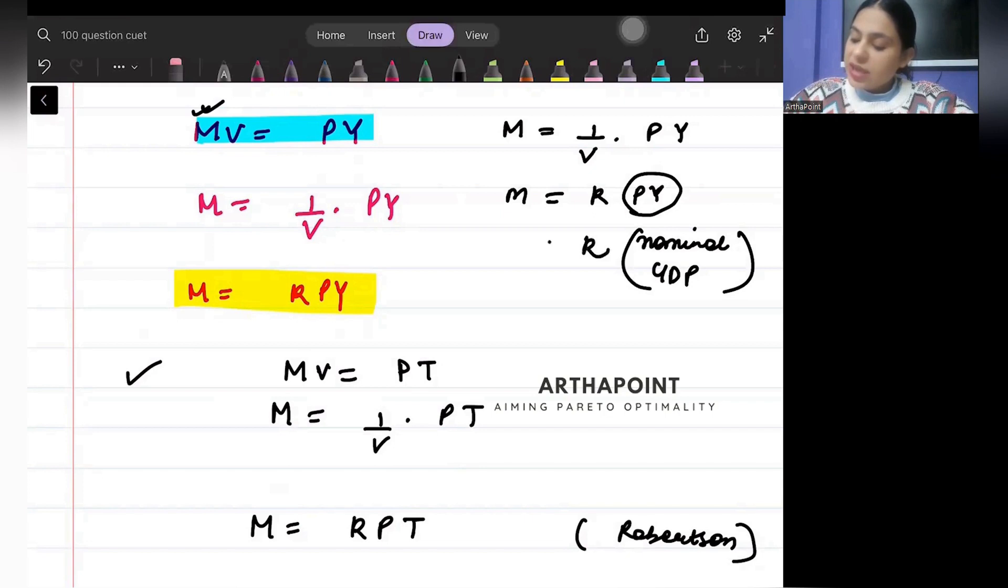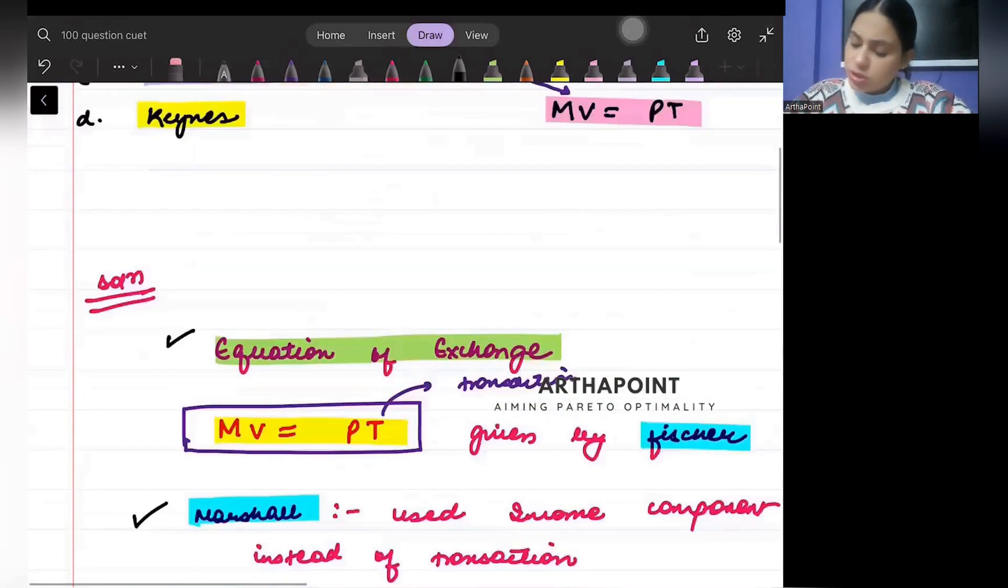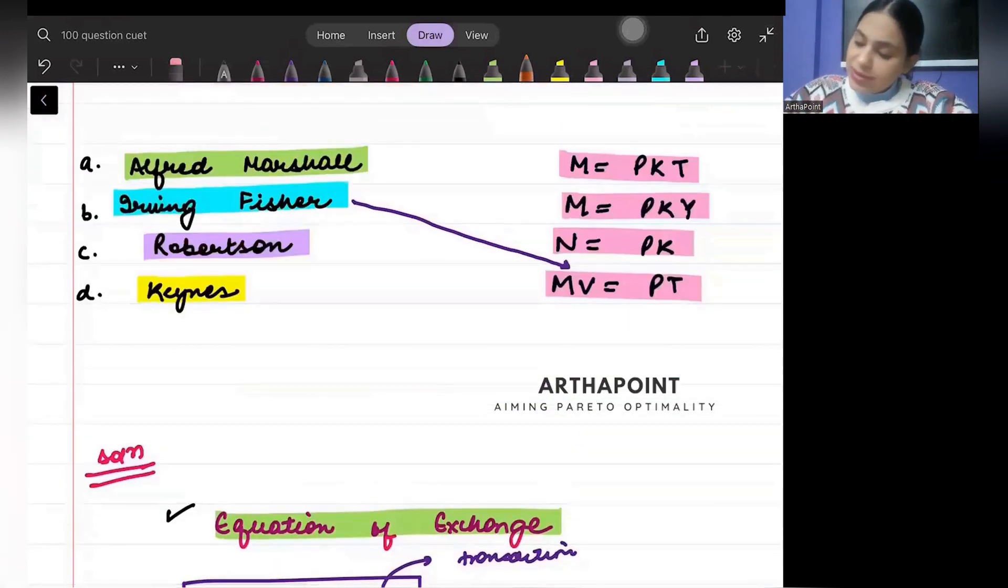So we are saying the amount of money required is some proportion of the GDP of the economy. This was given by Marshall, so you can link Marshall to this.